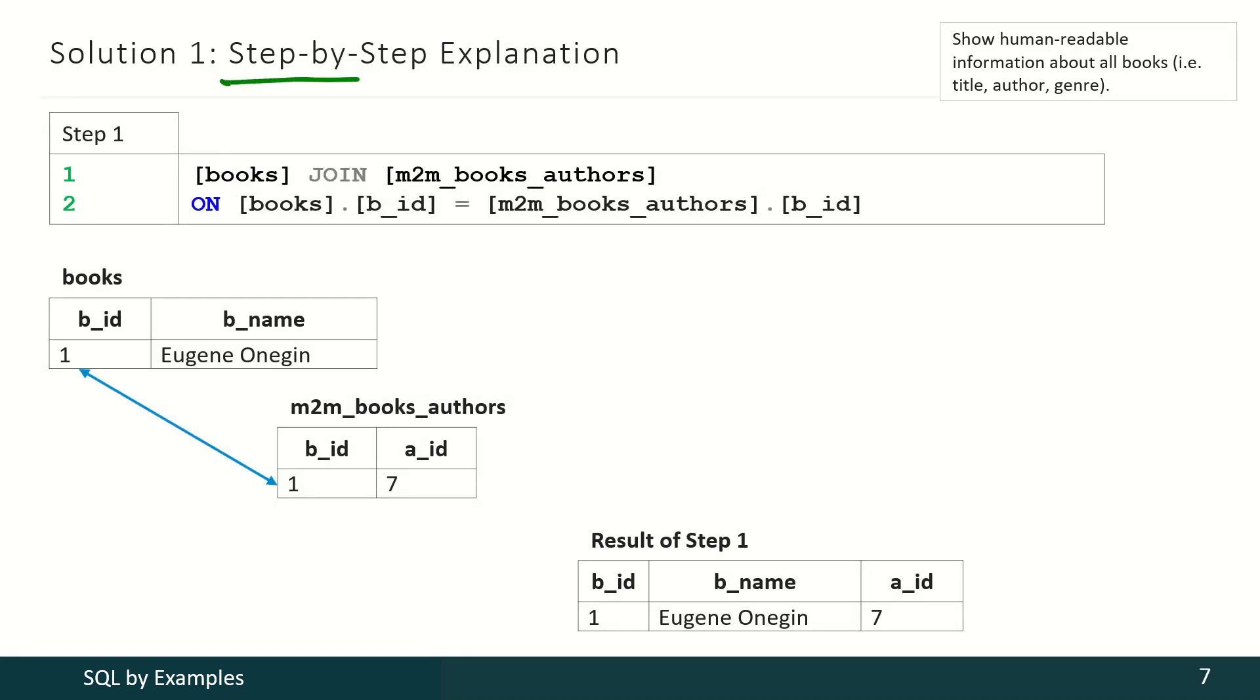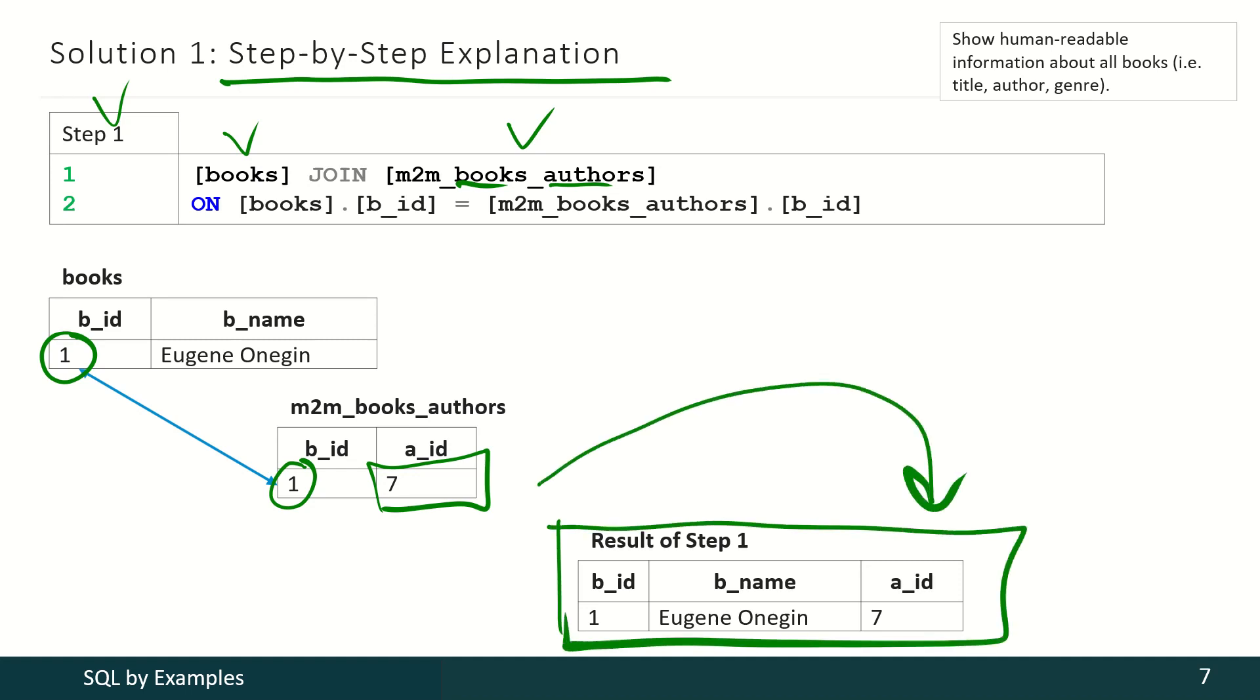Now let's see step-by-step explanation on how JOIN operator works. With step 1, we are joining the books table and that table storing the connection between books and authors. So the DBMS looks for identifier from this table and identifier from that table and then selects that information. And this is how we get our intermediate result number 1.